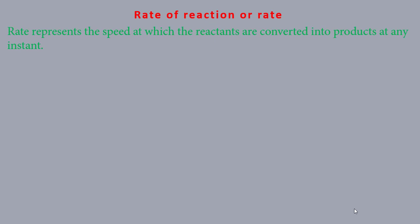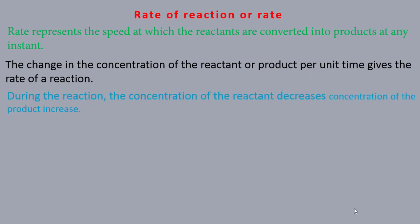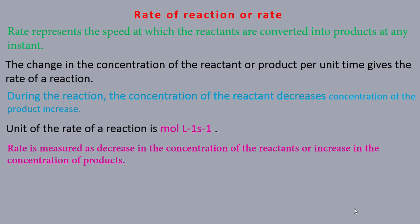Rate of reaction represents the speed at which the reactants are converted into products at any instant. That means the change in concentration of the reactant or product per unit time gives the rate of reaction. During the reaction, concentration of the reactant decreases and concentration of the product increases. The unit of rate of reaction is mol L⁻¹ s⁻¹. Rate depends on the initial concentration of the reactant.